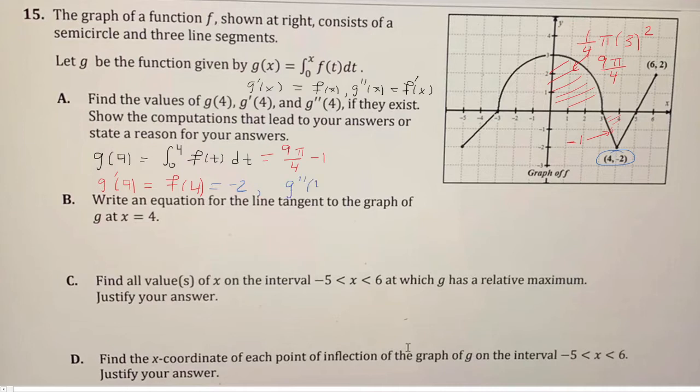And then g double prime of 4, that's the same thing as f prime of 4. And that's the derivative at this point here. So this is a corner, and we know that at the corner, the derivative does not exist, because the left-hand derivative is negative 2, the right-hand derivative is 2, and because the left-hand and the right-hand derivatives are not the same, it's not differentiable at x equals 4.